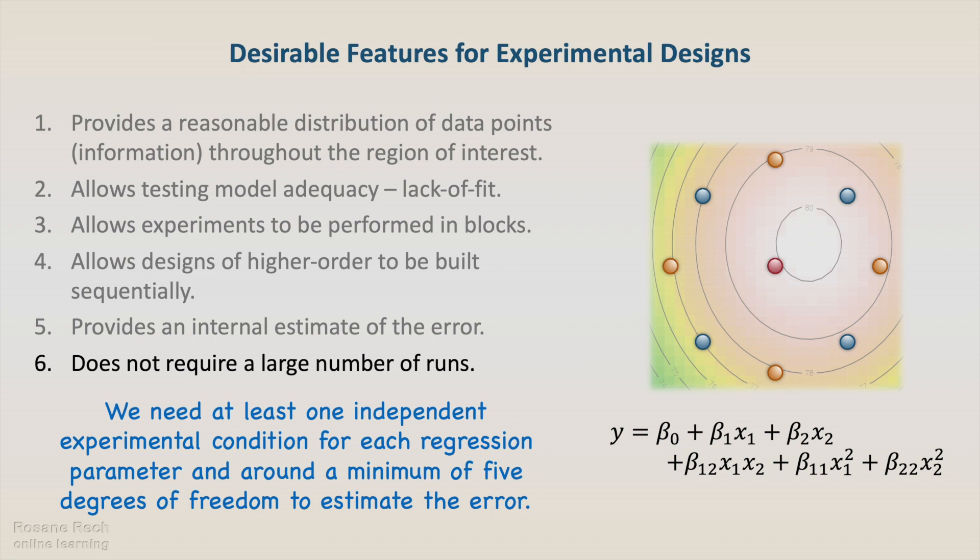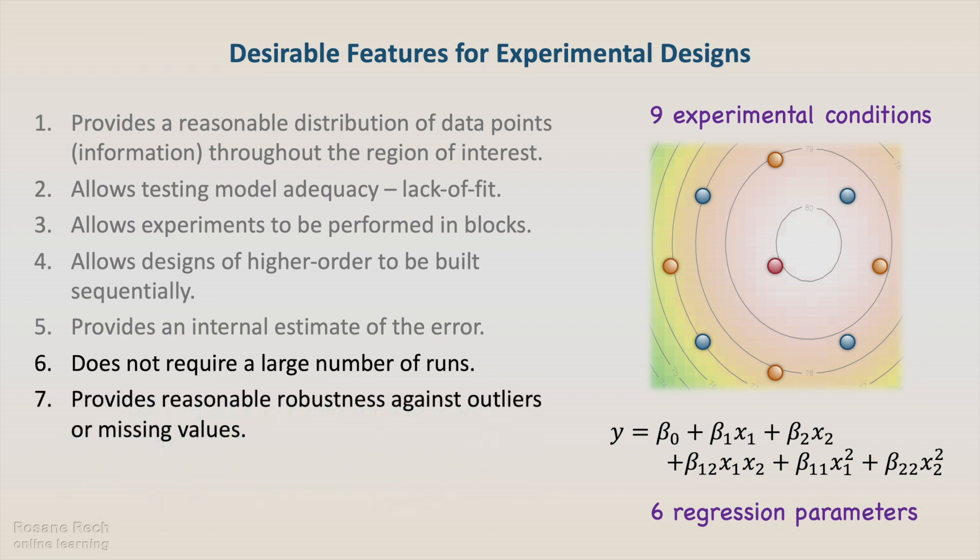A central composite design with two factors has nine experimental conditions and six regression parameters. This way, the number of experimental conditions is slightly higher than the number of regression parameters, providing reasonable robustness against outliers or missing values.